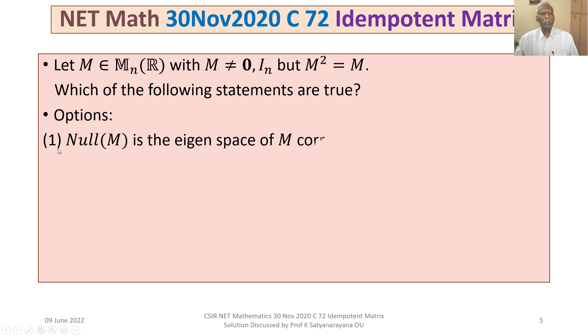Option 1: The null space of M is the eigenspace of M corresponding to the eigenvalue 0.